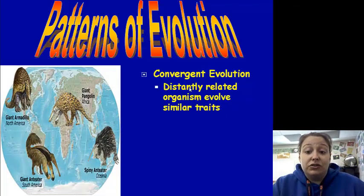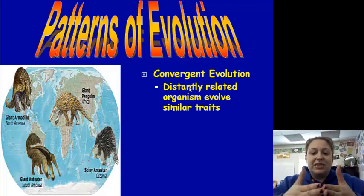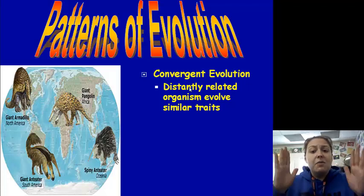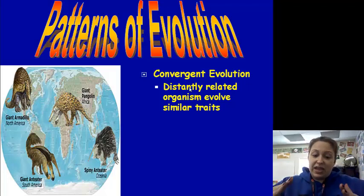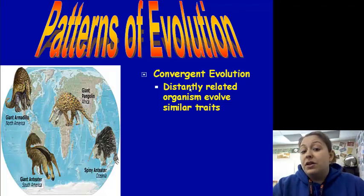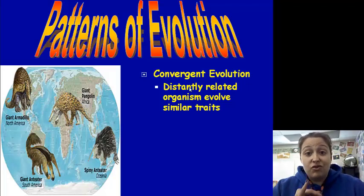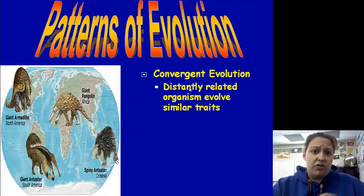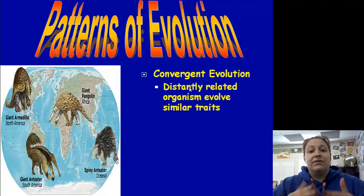We also see convergent evolution, where distantly related organisms evolve similar traits. They're different species placed into similar situations, so they evolve similar features — they converge. An example is the shark and the dolphin: both have a dorsal fin because it's beneficial in their environment, even though sharks and dolphins are not related. That's convergent evolution.